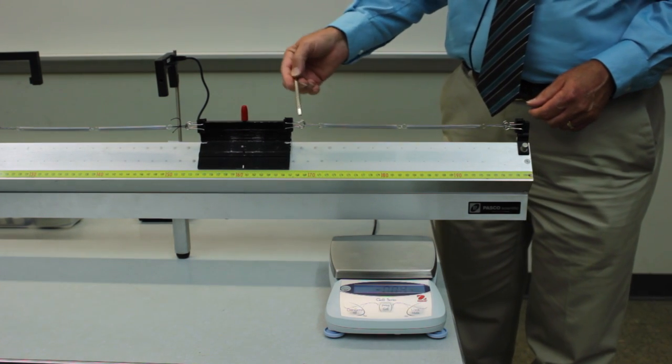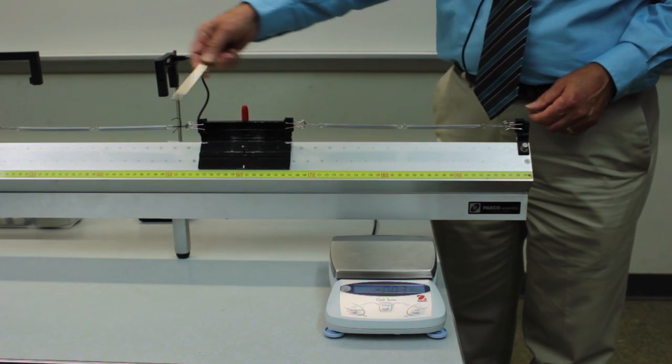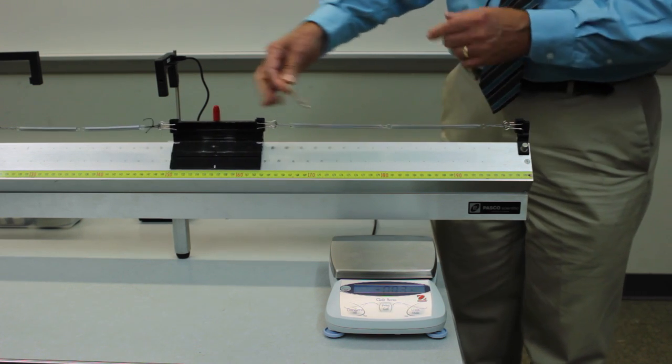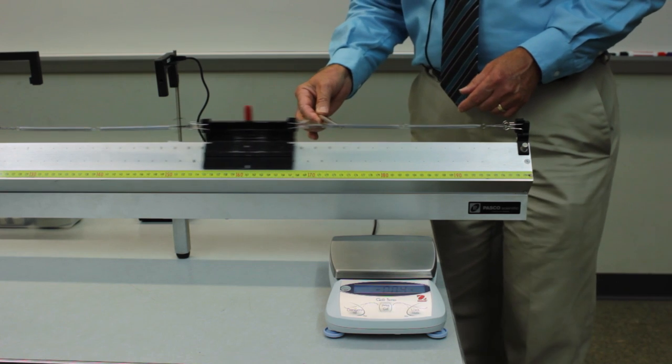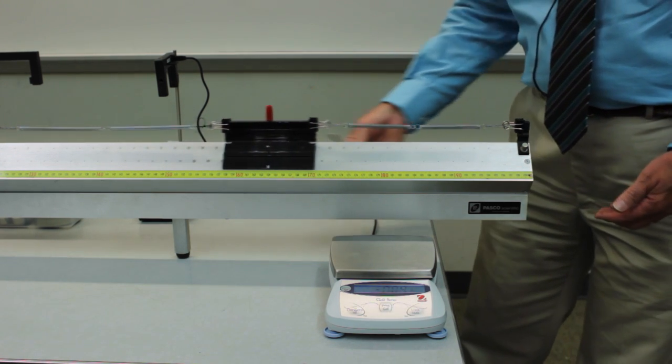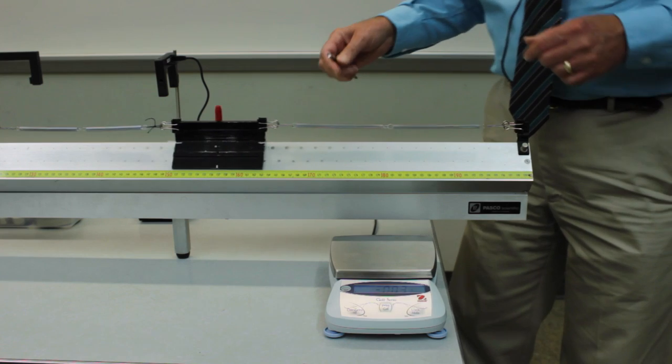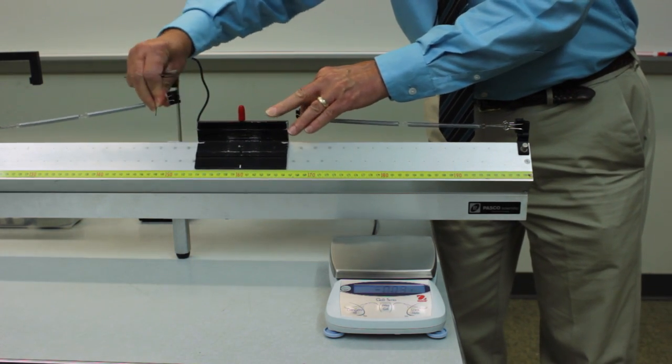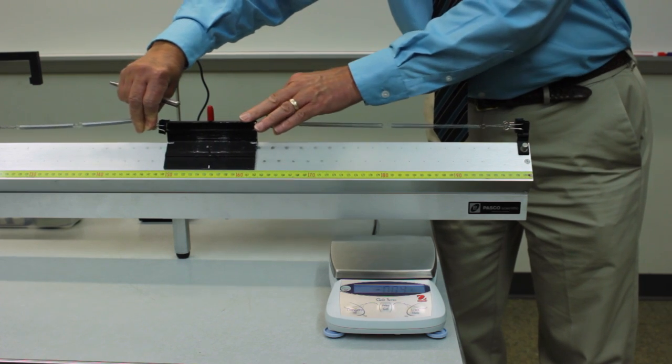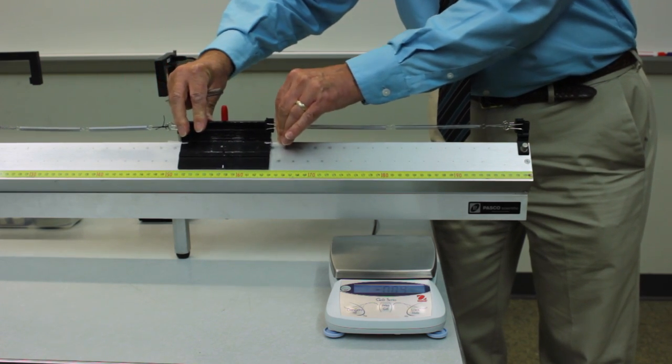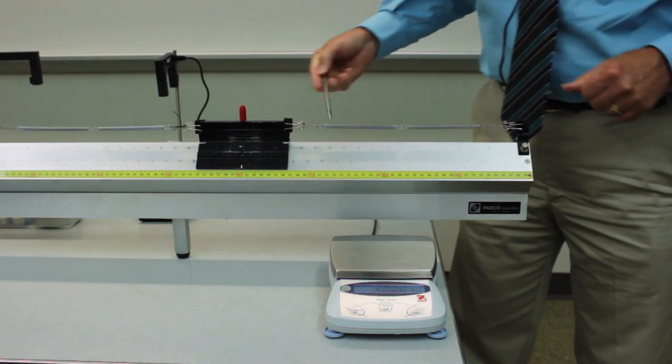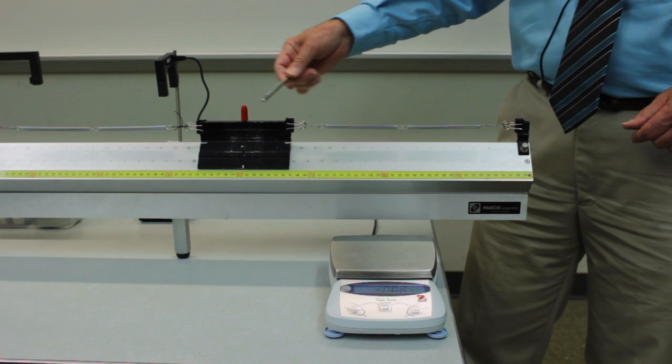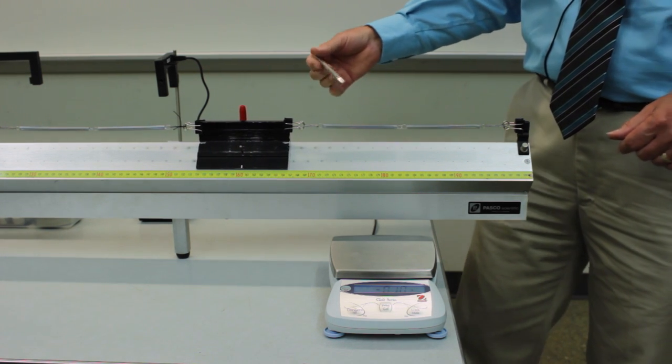So we're using a linear air track which serves two purposes. It constrains the mass to oscillate in one dimension, and it also does a pretty good job of removing the friction from the system by allowing the object to ride on a cushion of air. The system consists of a large mass connected by springs to fixed ends on the track. And what you want to do first of all is to determine the mass of the system as precisely as you think you can.